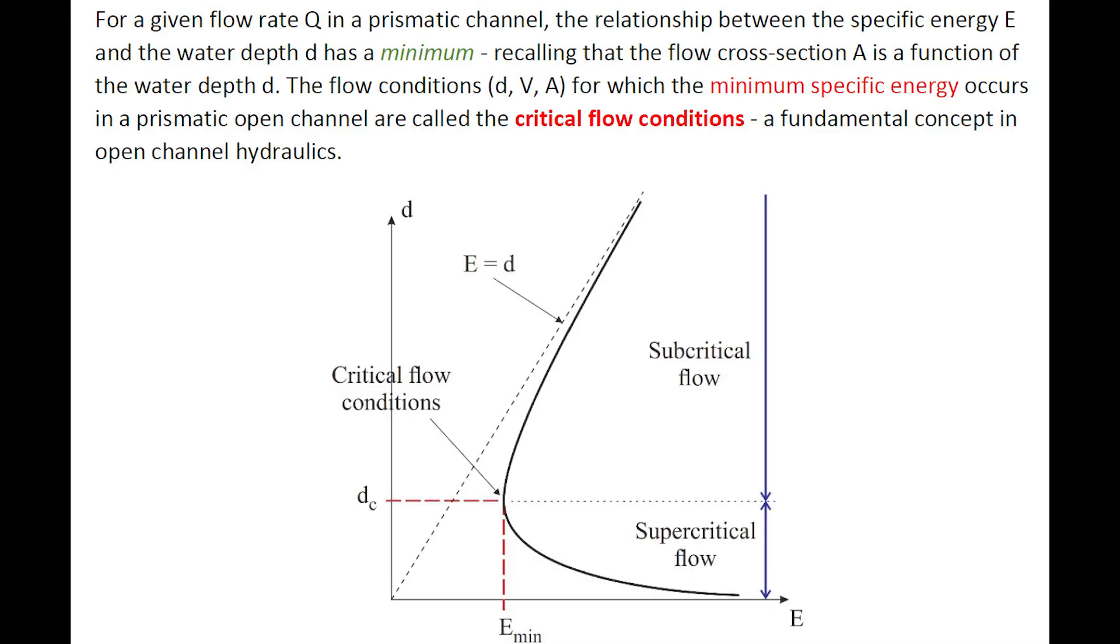For a given flow rate in a prismatic channel, the relationship between the specific energy and water depth are the minimum, recalling that the flow cross-section area is a function of the water depth.